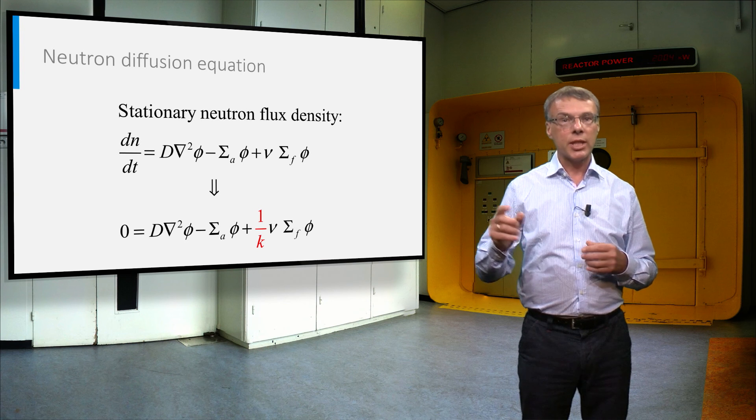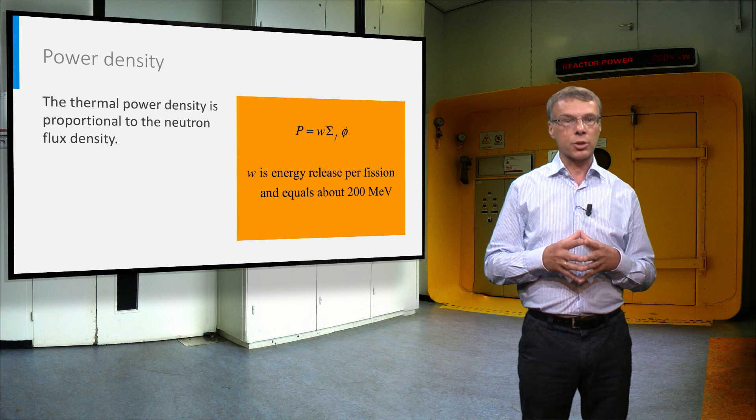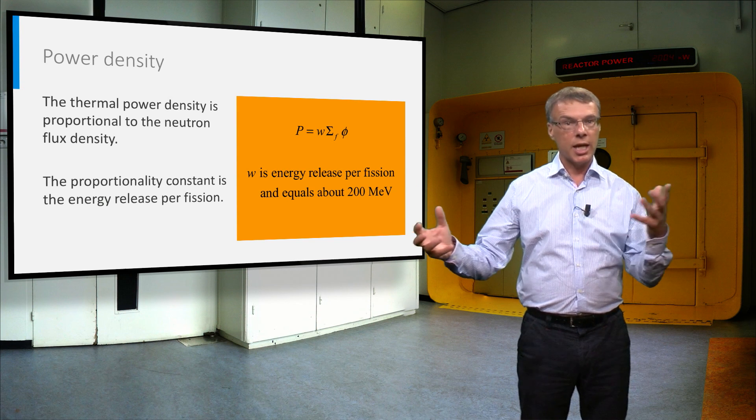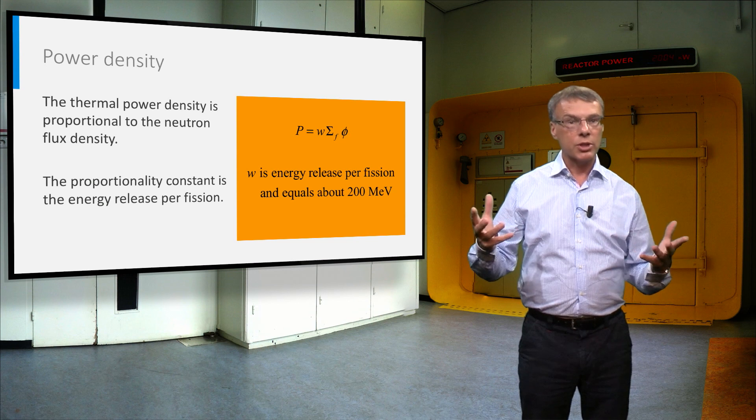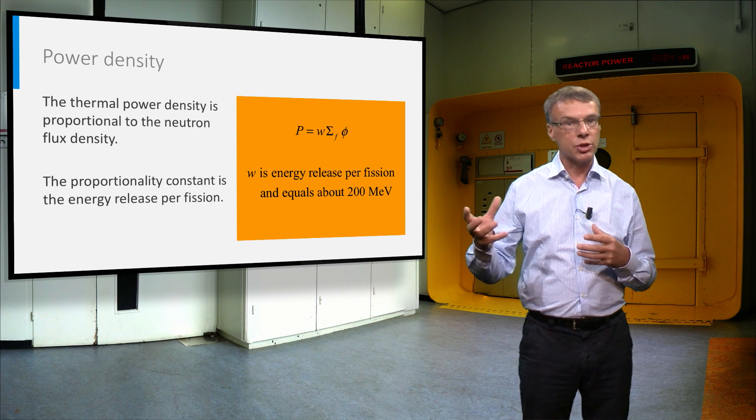From the neutron flux density we can calculate the power density in a reactor core. There is a simple relationship between the neutron flux density and the power density by first calculating the fission reaction rate and multiplying this with the energy release per fission.